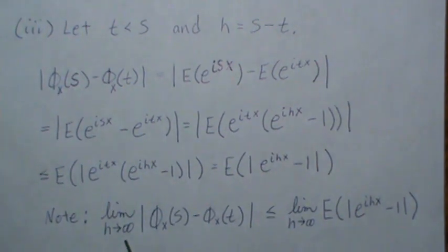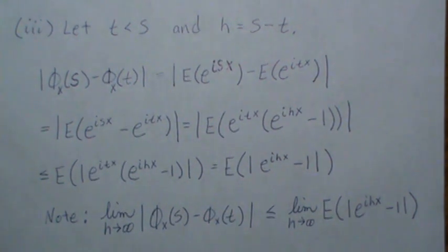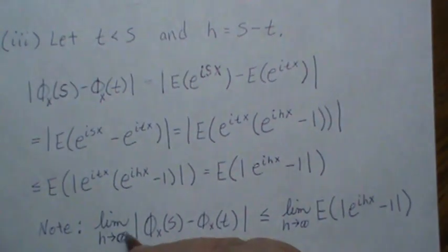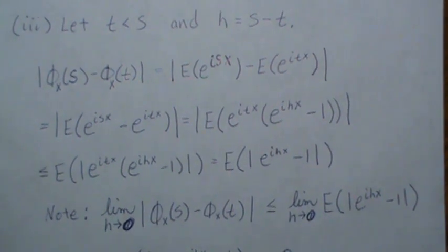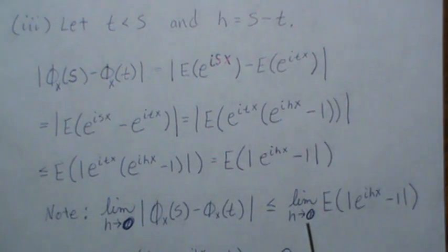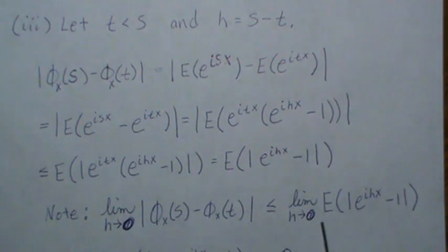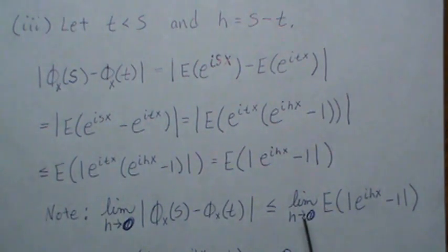The modulus of e^{itX} is one, so it drops out, leaving E[|e^{ihX} - 1|]. As h → 0, we need to take this limit through the integral sign — through the expectation. We can do so because the function is bounded by two: |e^{ihX} - 1| ≤ |e^{ihX}| + 1 = 1 + 1 = 2. Since it's bounded, the limit can be brought inside.